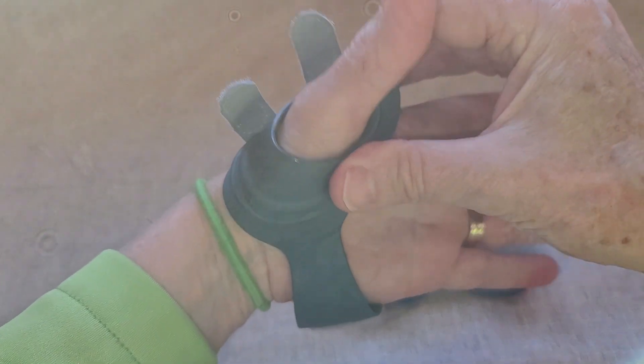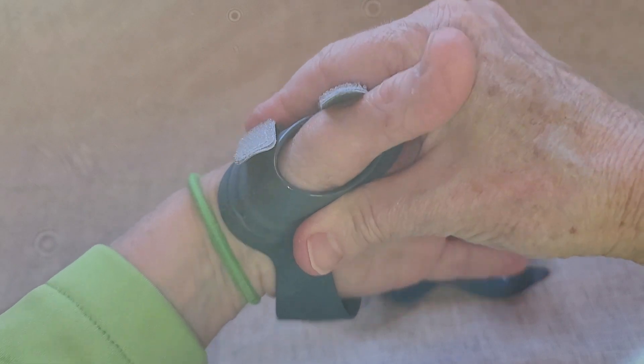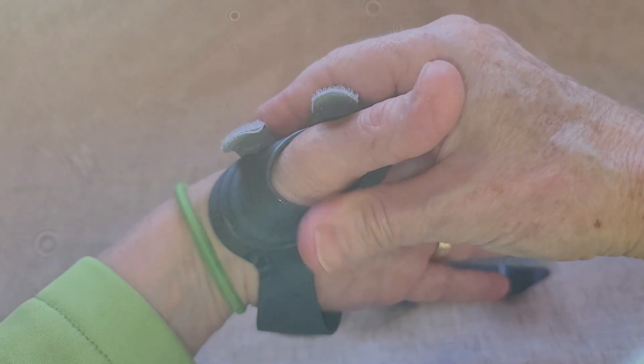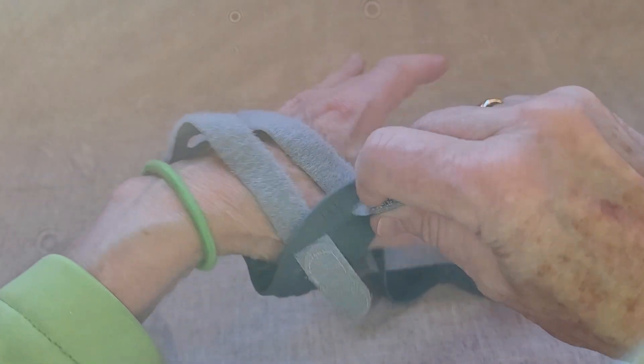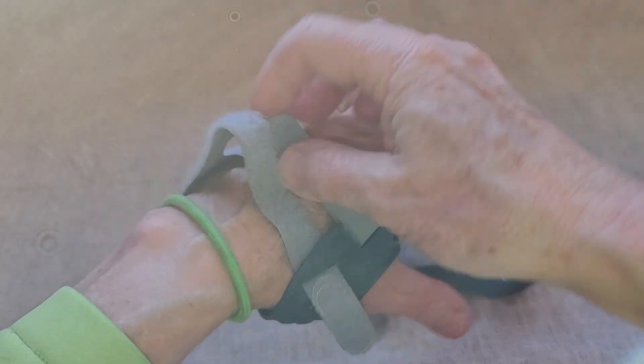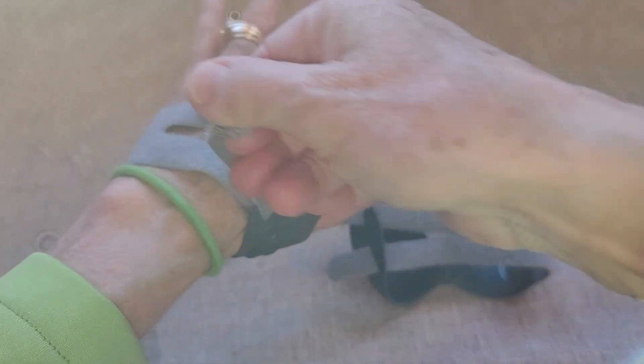What you do is after you put it on, you just squeeze it gently here so that it really snugs into your thumb. And then this is just a Velcro closure. You just flop that over there and put this over there.